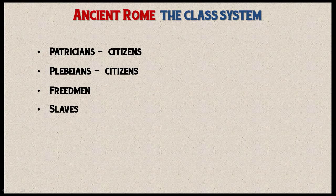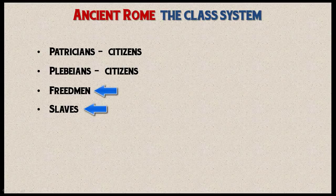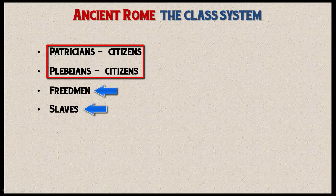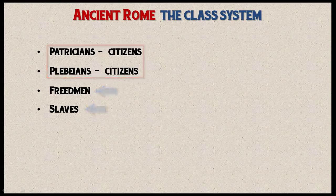There are four distinct classes we can identify in ancient Rome. At the bottom, as always, were the slaves. Above them were the freedmen, and then there was an upper class consisting of the patricians and the plebeians. The patricians and the plebeians were the citizens. When we talk about early class struggles in Rome, we're really talking about a struggle between citizens, with the patricians on the high end and the plebeians on the low end.